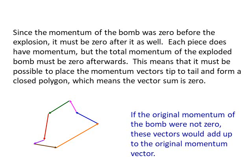Since the momentum of the bomb was zero before explosion, so it must be zero after it as well. See in the diagram, if all the momentum directions are denoted vectorically and you can see that it forms a cyclic order that means the final momentum is also zero.